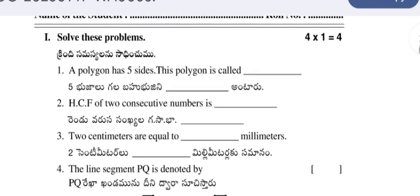A polygon has five sides. This polygon is called a pentagon as it has five sides, so it is called a pentagon. HCF of two consecutive numbers is one. Two centimeters are equal to 20 millimeters.